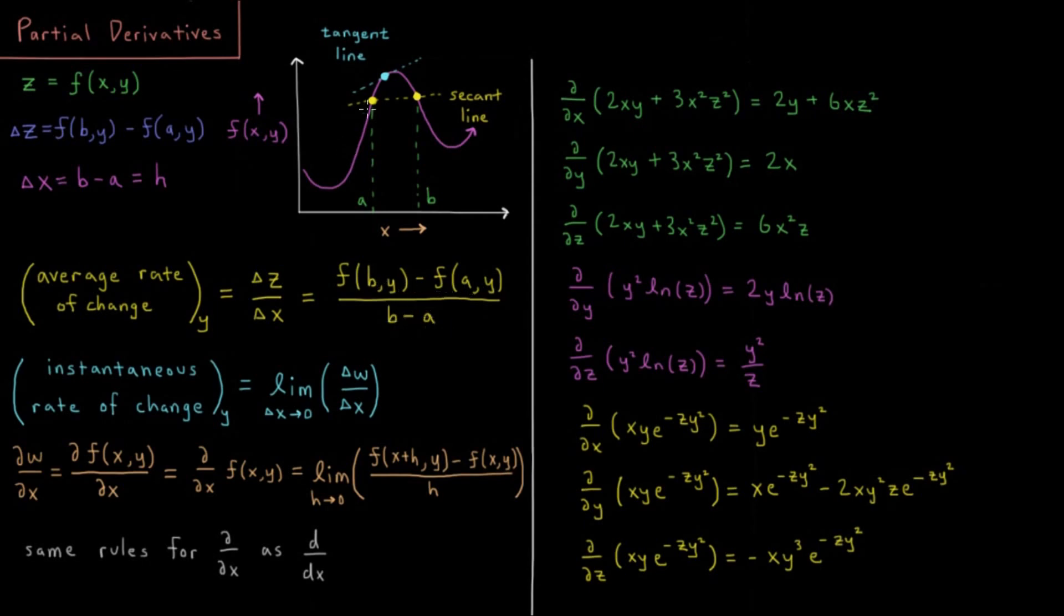So rise over run, just as it was in one dimension. That gives us the slope of what we call a secant line, a line that touches our curve twice and goes through both endpoints of that function.